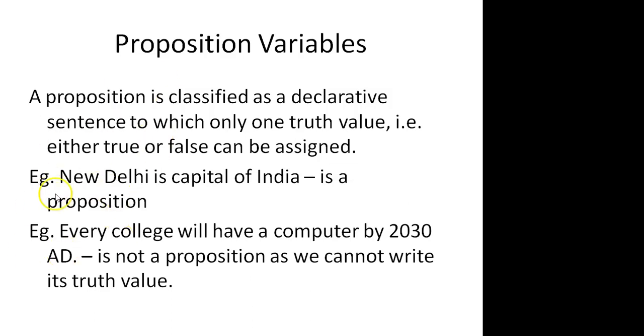In the last video we took the example of New Delhi is capital of India, which has a truth value of true. But a sentence like every college will have a computer by 2030 does not have a truth value because it is a forecast and we do not know whether it will be true or not.